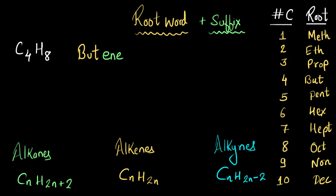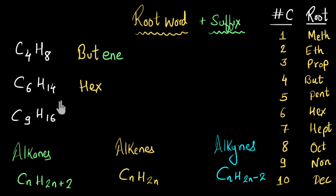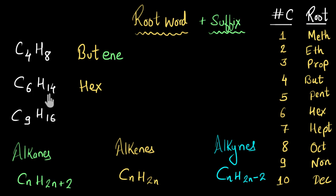Let's solve a couple more examples. The first compound has six carbon atoms, so the root word is 'hex.' To find the suffix, I check: six twos are 12, but the hydrogen count is 14 — two more than twice the carbons. Two more than twice means alkane, so the suffix is '-ane.' This compound is 'hexane.'